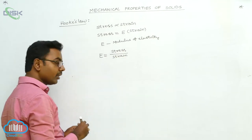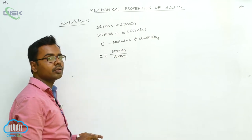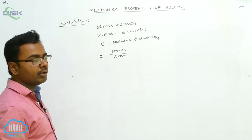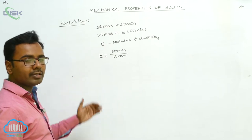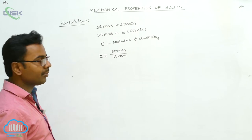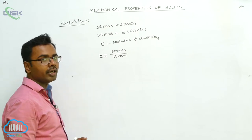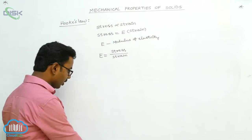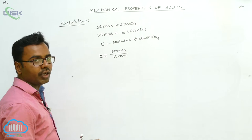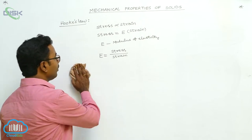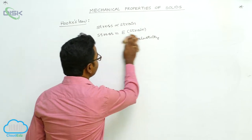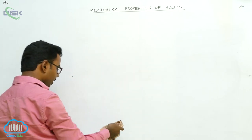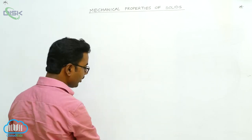Now we discuss three types of different modulus of elasticity, based on the three types of stress and three types of strain. Before going to discuss those three types of modulus of elasticity, we first discuss the stress-strain curve — that is, by increasing the stress, how does the strain change in a wire.